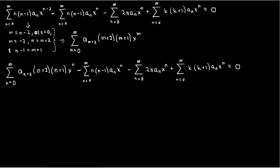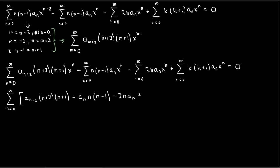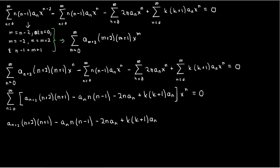Now every series has the same power of x and starts at n equals 0, so we can combine them into a single sum: the sum from n equals 0 to infinity of [a sub n+2 times (n+2)(n+1) minus aₙ times n(n-1) minus 2aₙ times n plus k(k+1) times aₙ] times xⁿ equals 0. Since this whole series equals 0, all the coefficients must be 0, which allows us to form our recursion relation.